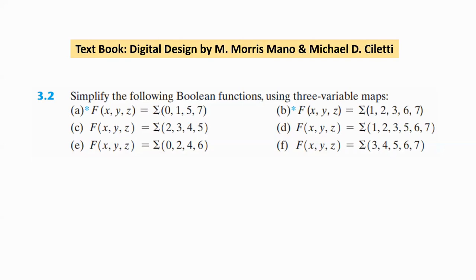Hello friends. In this video, we will discuss about a problem from the textbook Digital Design by M. Morris Mano and Michael D. Ciletti. The problem is to simplify the following Boolean functions using three-variable maps. Six Boolean functions are given, and these Boolean functions have to be simplified using the three-variable K-map.